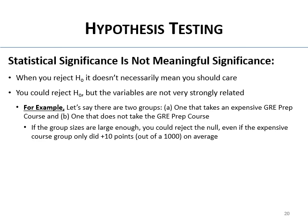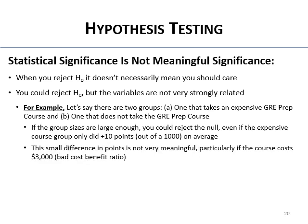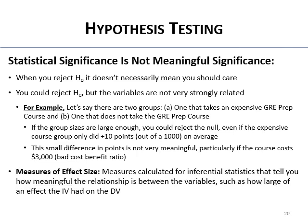Yeah, the course improved their scores, but not by any meaningful amount. This is statistically significant but not meaningfully significant. It's a cost-benefit question — the small improvement isn't meaningful because the cost of the course is high. Statistical significance says there's a difference but doesn't tell you if you should care. That's why we have measures of effect size — calculated for most inferential statistics. They tell you how meaningful the relationship is, how large the IV's effect was on the DV, what percentage of variability you can predict. R-squared in correlation was a measure of effect size — it told us how meaningful the relationship was and what proportion of one variable you could predict from the other.